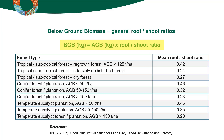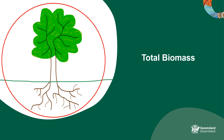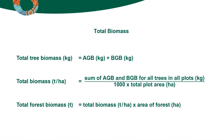Otherwise, a general root-shoot ratio can be applied to the AGB of a forest to estimate the BGB. These general ratios should only be used across a number of trees such as a stratum or a forest, as they may not provide a very accurate estimate for individual trees. Total biomass is the sum of the AGB and the BGB, or the mass of all living parts of a tree or forest. For an individual tree, once you have calculated the AGB and BGB values, they can be added together to give the total biomass in kilos.